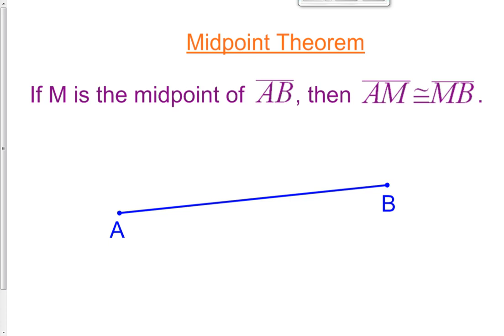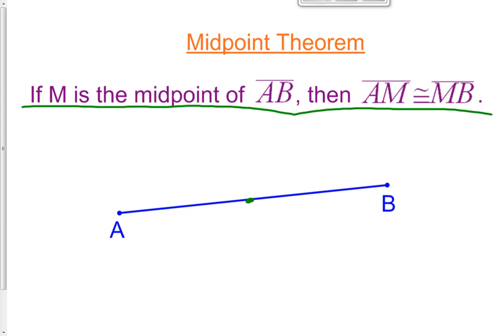We're going to talk about the midpoint theorem as we discuss proofs. We're done with postulates. To refresh yourself, write this down: the midpoint theorem states that if M is the midpoint of a segment, then AM is congruent to MB. Here's segment AB — if M is the midpoint placed in the middle, it cuts AB in half, so AM is congruent to MB. That's the definition of midpoint.